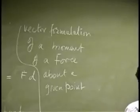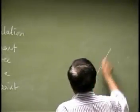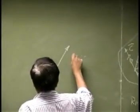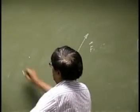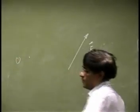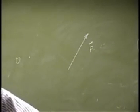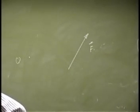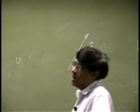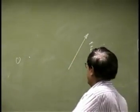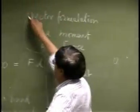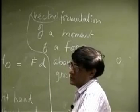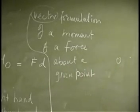So, again, we know the force, so we can draw the force F, and let's say the point is somewhere here, and that point is O. So, we're looking at the definition of the moment of force F, and we're going to use vectors to do this. Instead of just going through like this, we're going to use vectors.